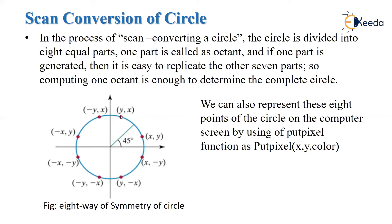Then we can say P2 has the coordinate (y, x), P3 has the coordinate (-y, x), P4 has the coordinate (-x, y), and so on till point P8. We can represent these points on the circle on the computer screen with the help of the putpixel function, which has the syntax: putpixel(x, y, color).